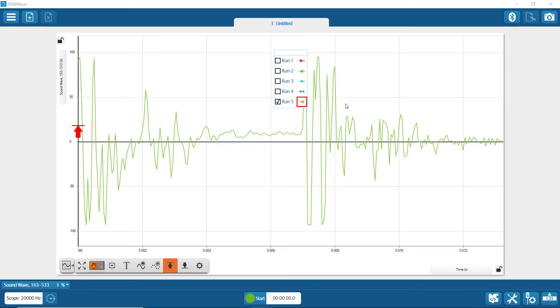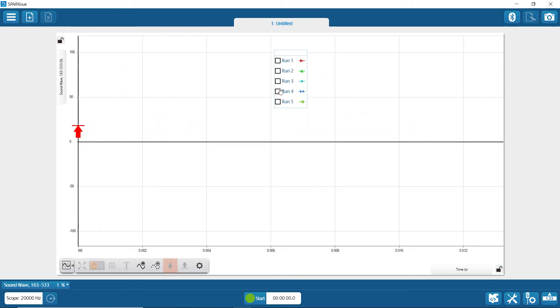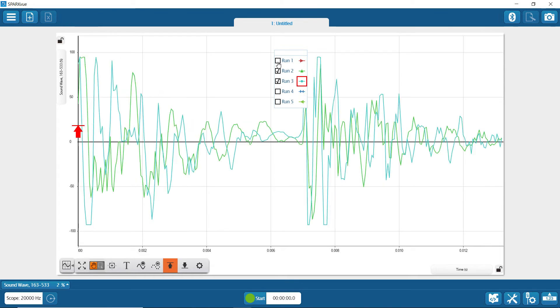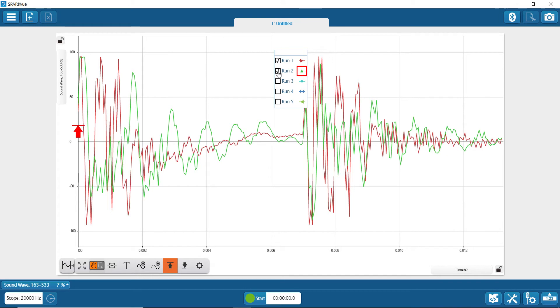The time it took to return can be measured using the coordinates tool. First, let's move back to our first run. Notice how I can unclick these runs and they appear. You can do more than one, but let's just do run one.